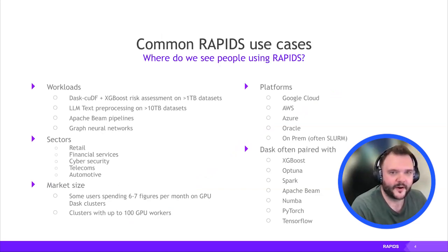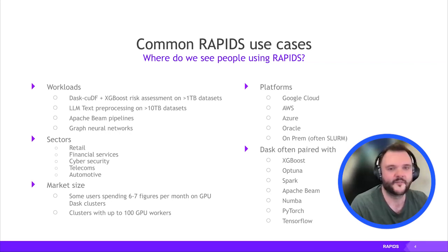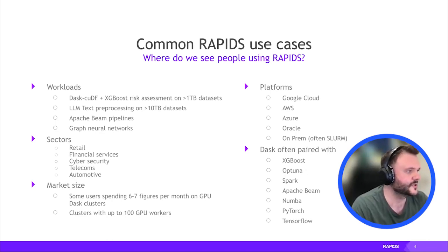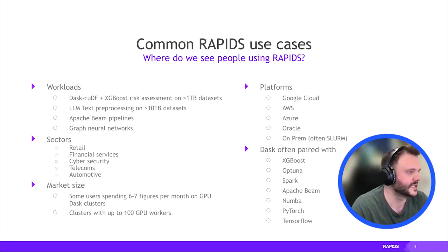At a high level, we see a lot of people using Dask with cuDF and XGBoost — a really big bread-and-butter Rapids use case. People have a terabyte or so of data, want to train a model, do HPO with Optuna or similar, and do things like risk assessment in financial services or cost prediction. There's also been a lot of work on LLM-based tooling, particularly pre-processing data before training an LLM — built out with Dask, using much larger datasets.